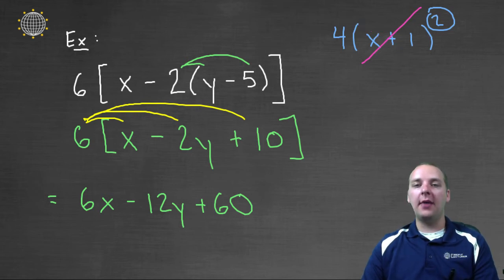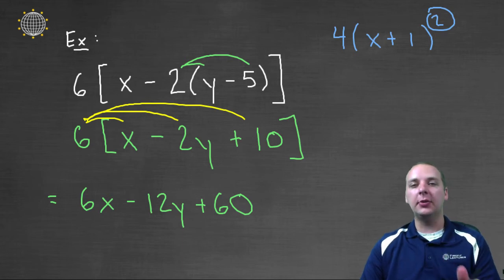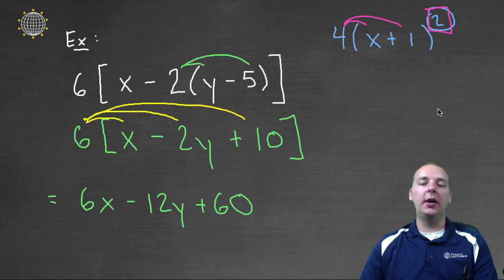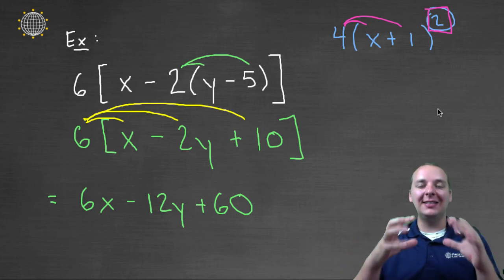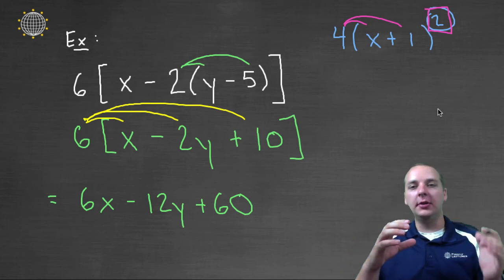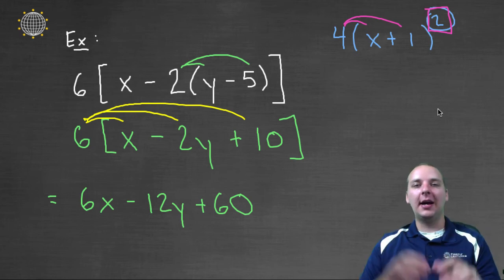A lot of students that I have will desperately want to use the distributive property, because it looks like the right thing to do. But you cannot distribute the four to the x and the four to the one, and the reason again, is because this is squared. So just remember, if you have an exponent up there, that basically locks it down from being able to distribute a number inside those parentheses.